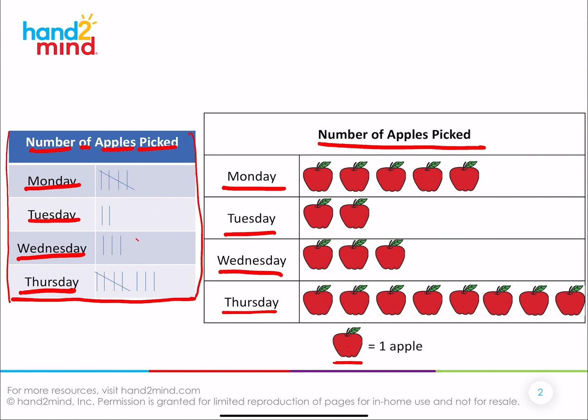This graph gives us a different way to display our data in a way that I can see the information really easily. The picture helps me know what the graph is about. I can see really quickly which one's the most and which one's the least. This is what's called a picture graph, or you might hear people call it a pictograph — it's the same thing.